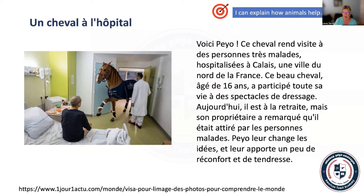The article, for your curiosity, explains that this is a retired dressage horse, 16 years old, who goes in like a service animal and brings cheer to people that are really sick in the hospital in Calais, in the north of France.